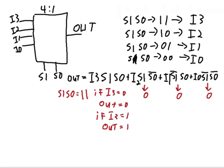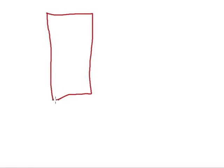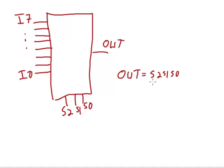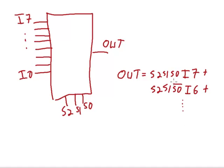We can expand this to an 8-to-1 multiplexer. With 8 inputs I7 down to I0, 3 select bits S2, S1, S0, and 1 output, the output equals S2·S1·S0 selecting I7, or S2·S1·(not S0) selecting I6, and so on — we would have 8 expressions in total in this sum of products. I'll let you figure out what the remaining 6 expressions are.